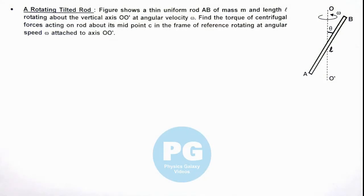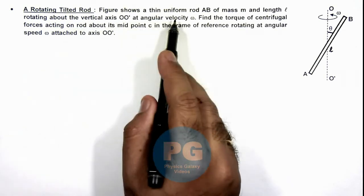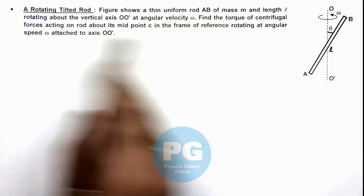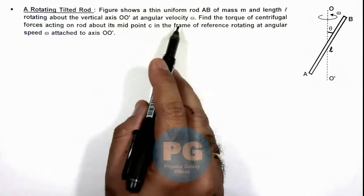In this illustration, we'll be analyzing a rotating tilted rod. Here the figure shows a thin uniform rod AB of mass m and length l rotating about the vertical axis OO' at angular velocity omega.